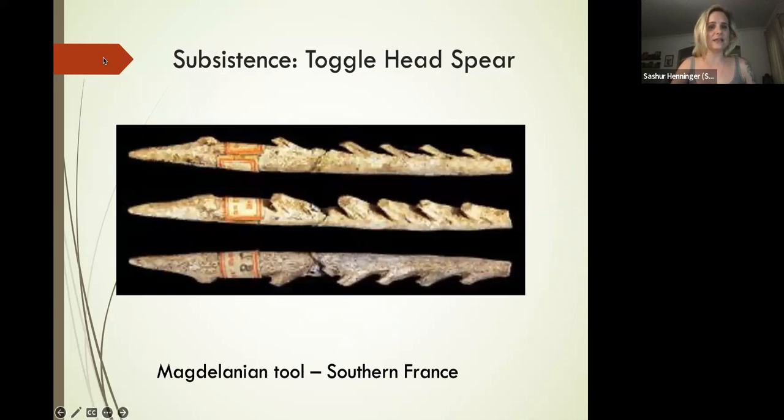Serrated edges like these and the toggles that have been cut into these toggle-head bone spears are going to be very important to killing an animal and dropping it very quickly. We're going to do more damage with a toggle and a serrated edge.